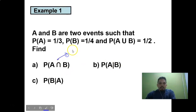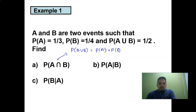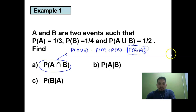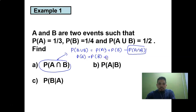For this, the formula is: probability of A union B equals probability of A plus probability of B minus probability of A intersect B. Bringing the intersect term to the left side and multiplying by negative gives: probability of A intersect B equals probability of A plus probability of B minus probability of A union B.